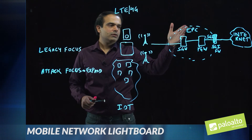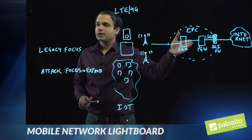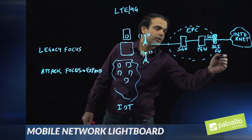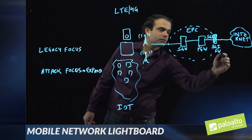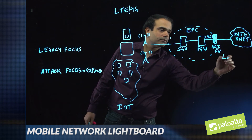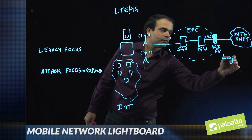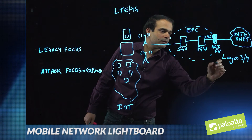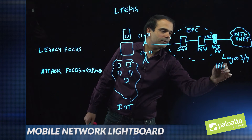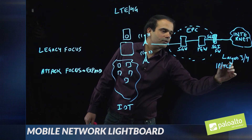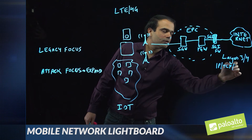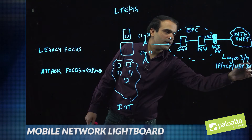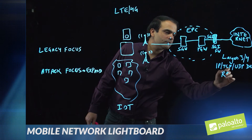The legacy SGI firewalls currently perform these functionalities: Layer 3 and 4 security covering IP, TCP, and UDP, as well as DOS prevention and recon attack prevention.